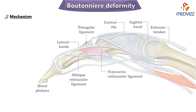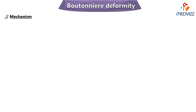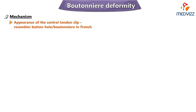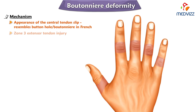The deformity derives its name from the appearance of the central tendon slip, which was thought to resemble a buttonhole — or 'boutonnière' in French — when the rupture happens. Boutonnière deformity is a zone 3 extensor tendon injury.